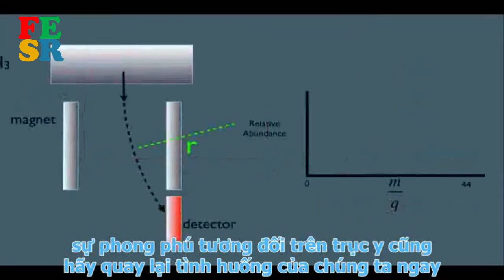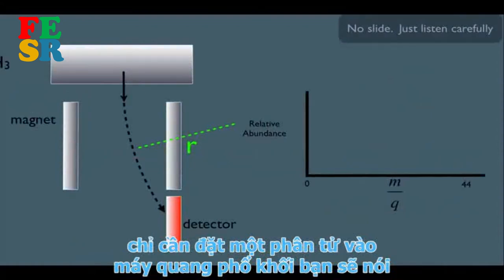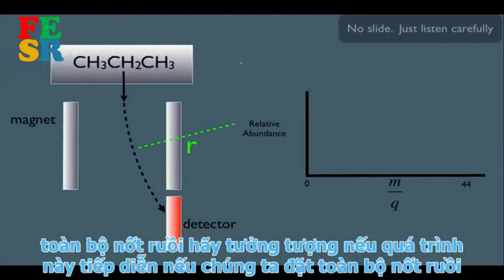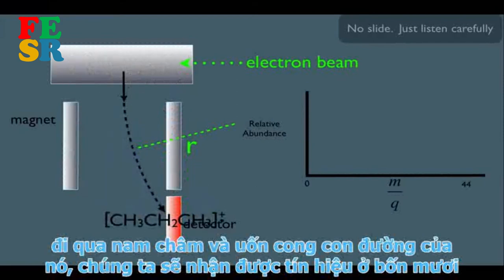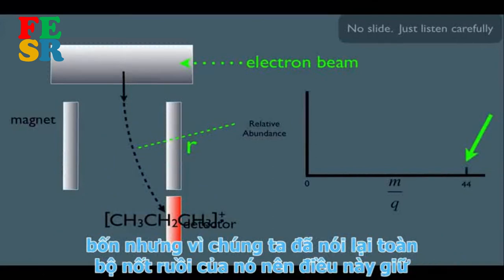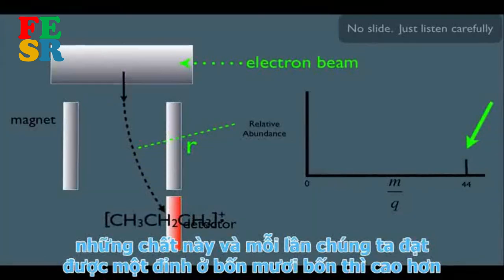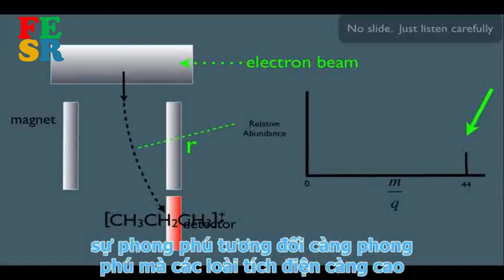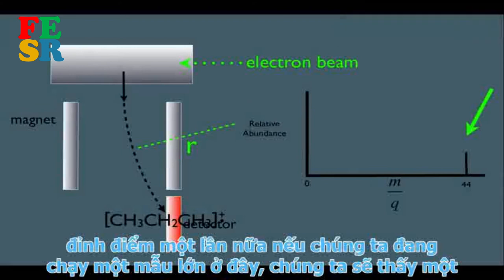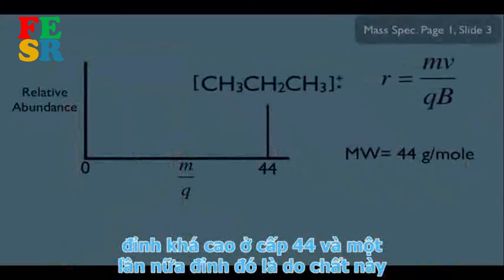Now what about relative abundance on the y-axis? When running a sample, you put a whole mole of propane into the mass spectrometer, not just one molecule. As the process repeats for many molecules, the peak at 44 gets higher and higher. The more abundant that charged species is, the higher the peak — so a large sample gives a tall peak at 44.